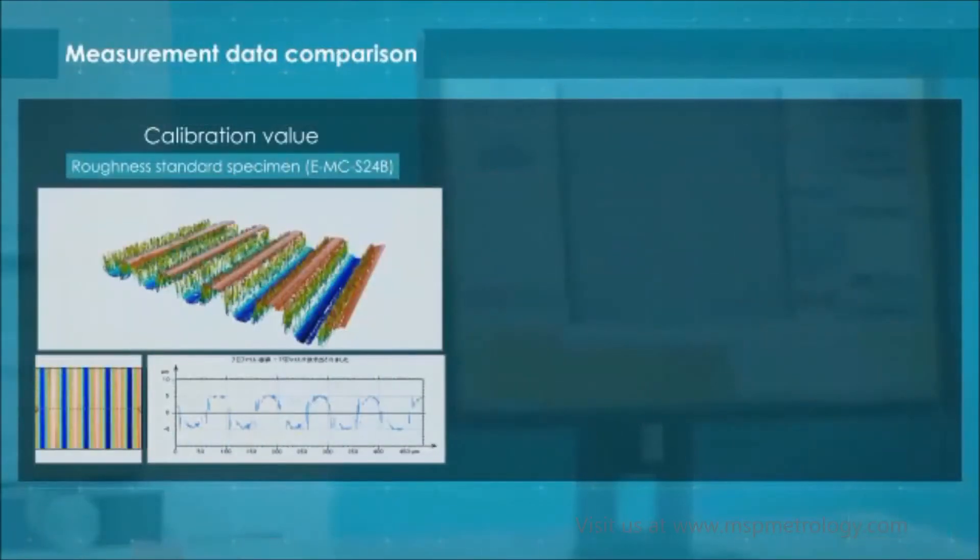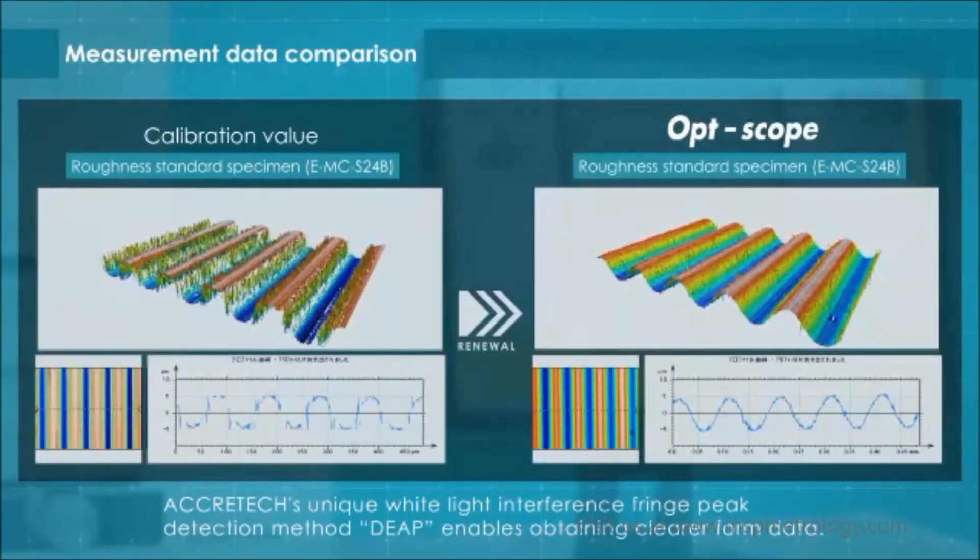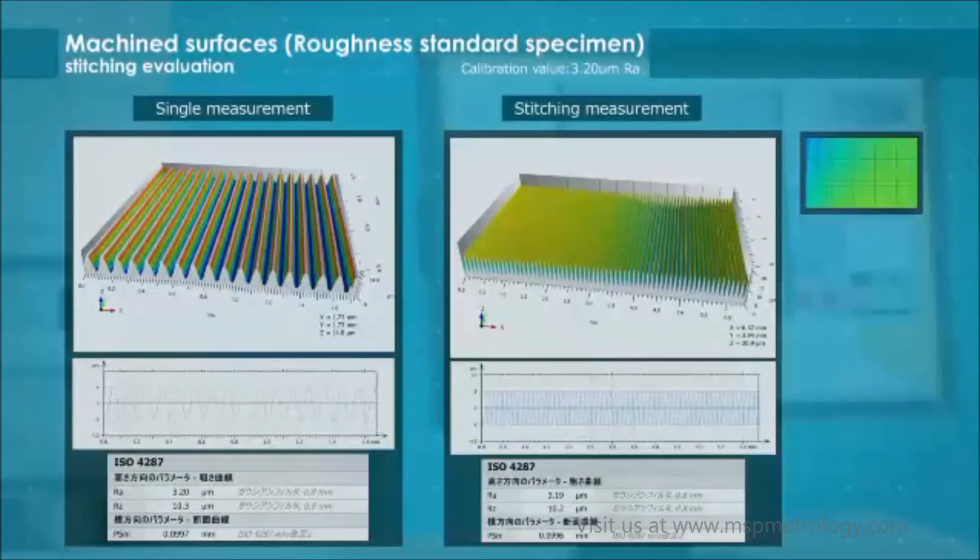DEEP enables you to obtain clearer form data from inclined surfaces that cannot be measured accurately by conventional methods. As you can see, by combining DEEP, the electric stage and combination function, you can have a more accurate evaluation and analysis in a wider range on machined surfaces.